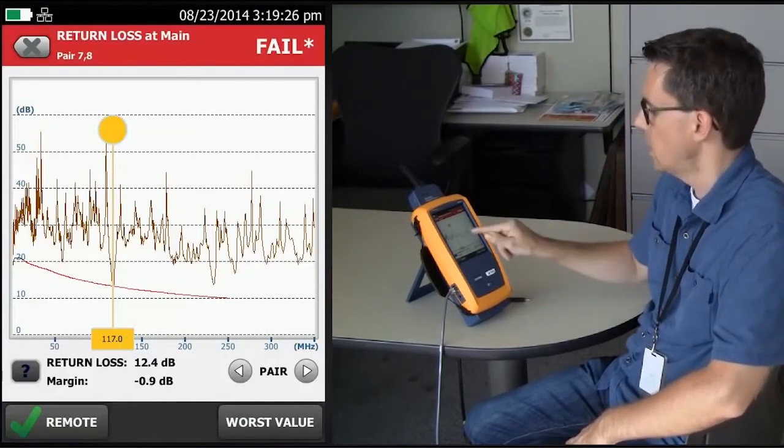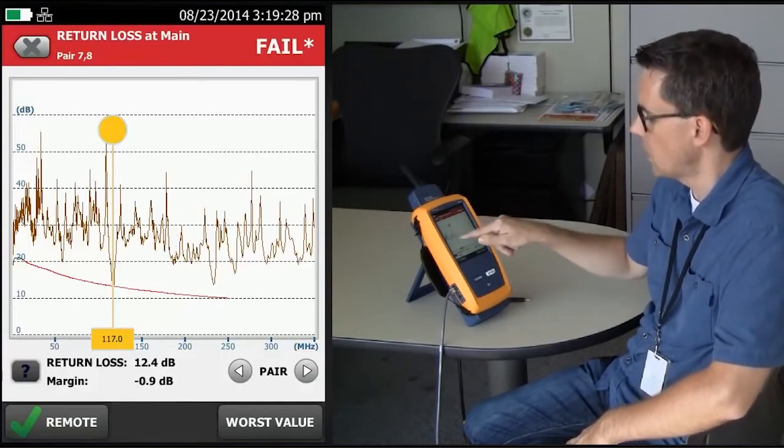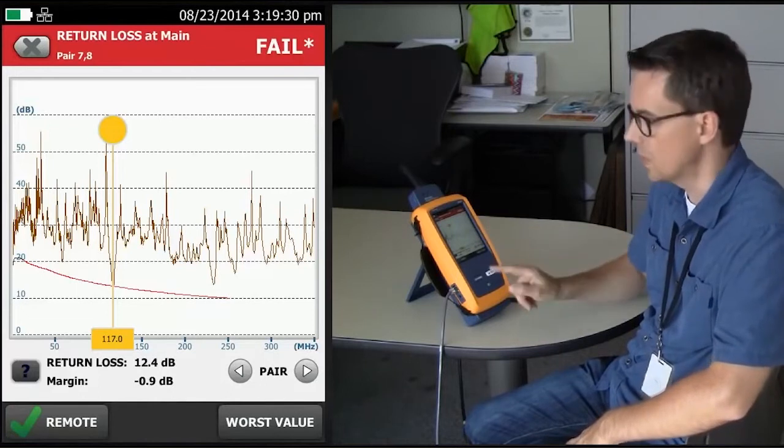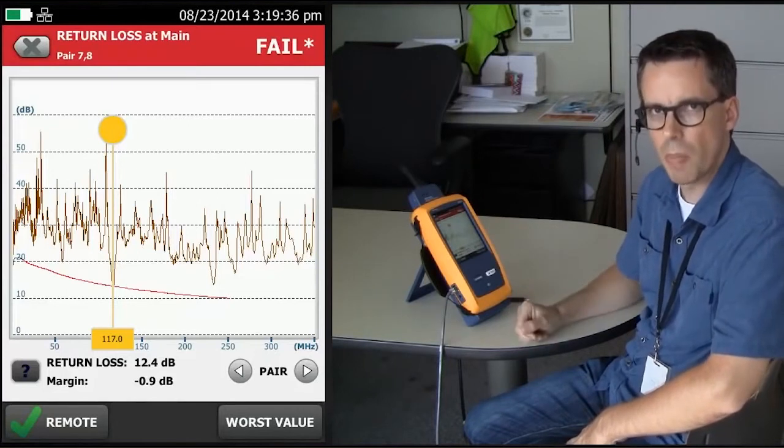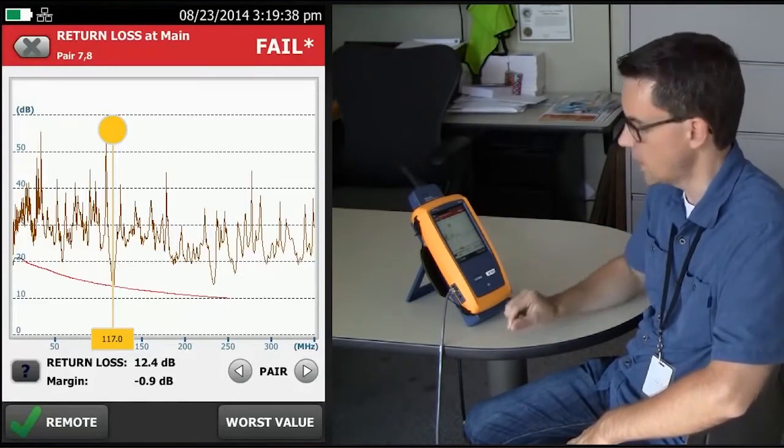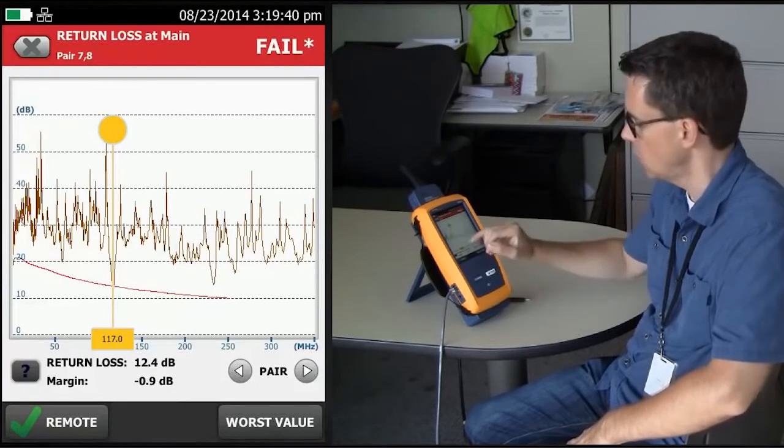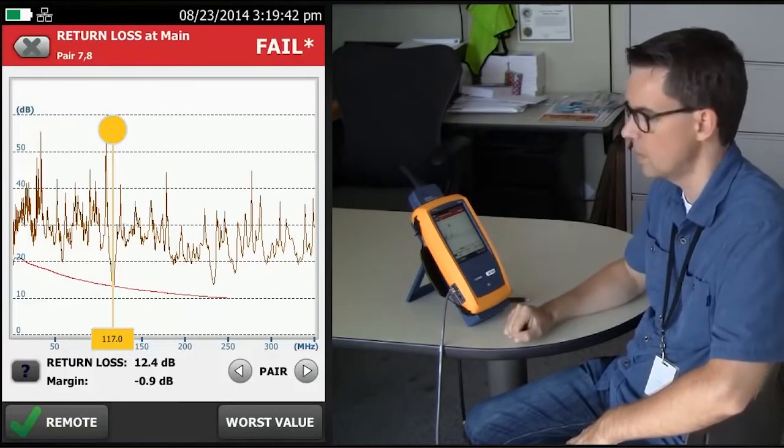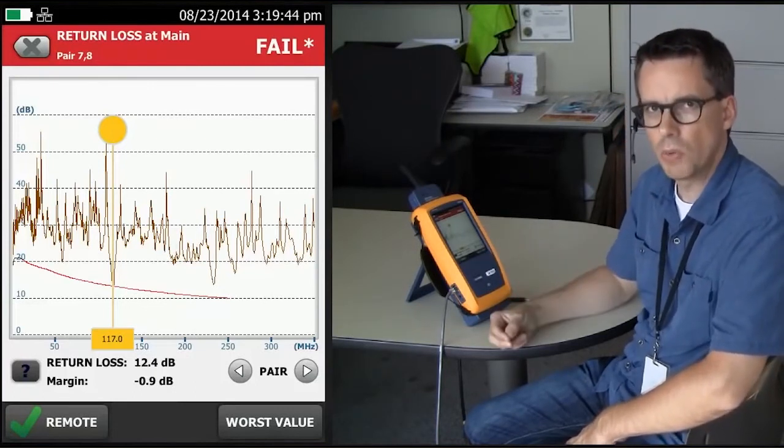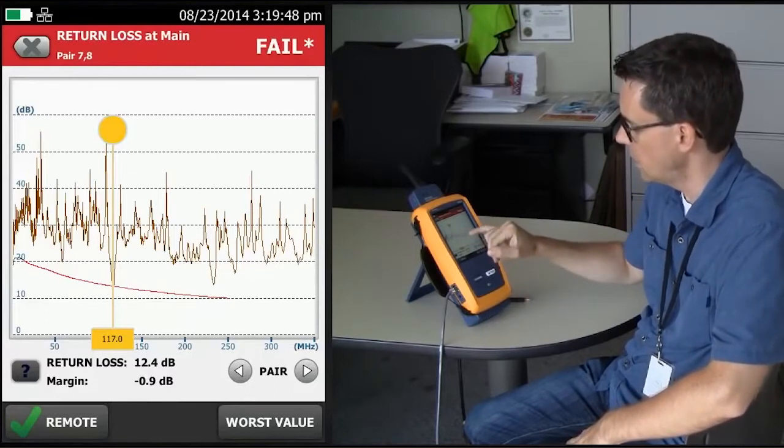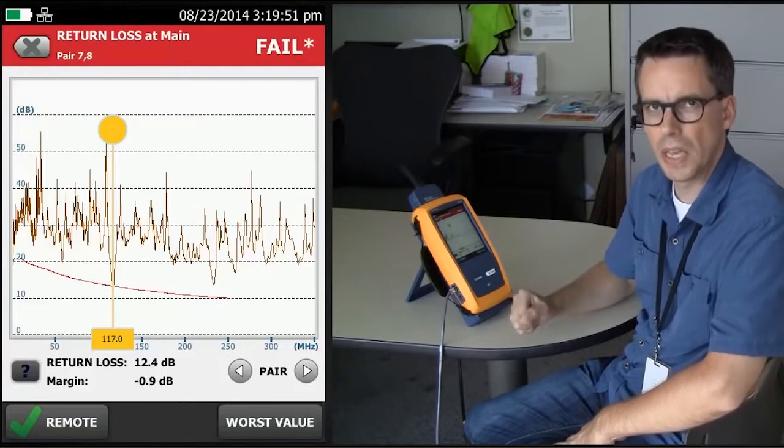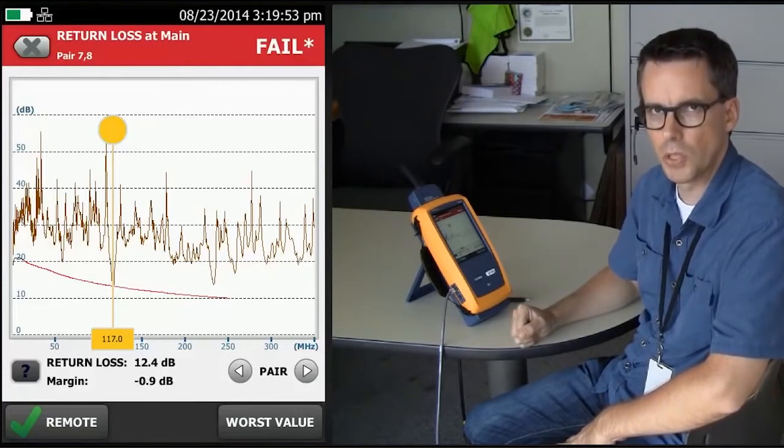However, there is something to be told about this screen here, because when you look at each side of the cursor, the rest of the frequency response is actually passing. It's above the test limit with good margin. It's just happening at this one frequency point. When you see a return loss fail at a single point frequency like this, and everything else is passing with good margin, that's an indication of a cable issue.